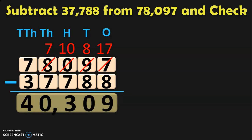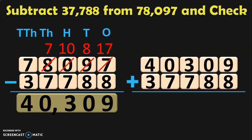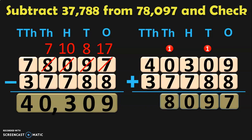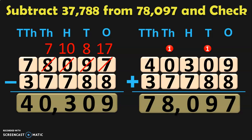Now we are going to do the checking operation. Add the difference 40,309 with the smaller number 37,788. Write down the place values and begin the addition from the ones place. 9 plus 8 in the ones place gives you 17; retain the 7 and carry the 1 to the tens place. In tens place: 1 plus 0 is 1, and 1 plus 8 is 9. In hundreds place: 3 plus 7 gives you 10; retain the 0 and carry 1 to the thousands place. In thousands place: 1 plus 0 is 1, and 1 plus 7 is 8. In ten thousands place: 4 plus 3 gives you 7. The answer is 78,097, which is the bigger number, so the subtraction is correct.